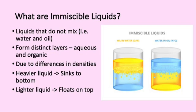What are immiscible liquids? They are liquids that do not mix and instead form distinct layers. This happens due to differences in their densities. The heavier liquid will sink to the bottom, while the lighter liquid floats on top.